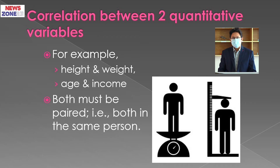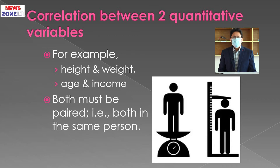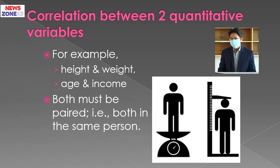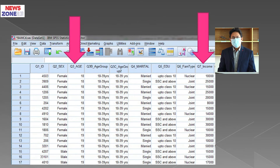For example, height and weight: if we want to see the association between height and weight, we compute correlation. Similarly, we can see the association between age and income. Height, weight, age, and income are all quantitative variables. One important thing to keep in mind: both variables must be paired — that is, both must belong to the same person, like one person's height with that same person's weight.